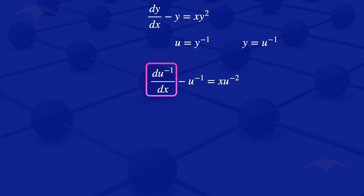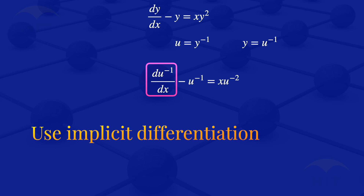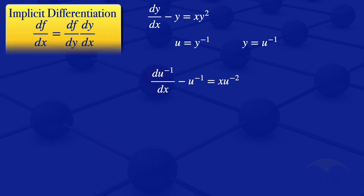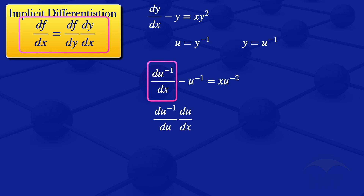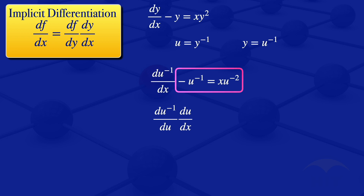Looking at the derivative of U to the power minus 1 with respect to X, we have to use implicit differentiation. For implicit differentiation, the derivative of F with respect to X is equals to the derivative of F with respect to U multiplied by the derivative of U with respect to X. So this part becomes the derivative of U to the power minus 1 with respect to U, multiplied by the derivative of U with respect to X, minus U to the power minus 1 is equals to X multiplied by U to the power minus 2.